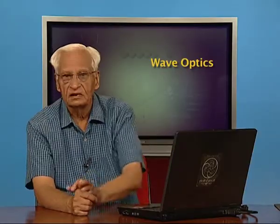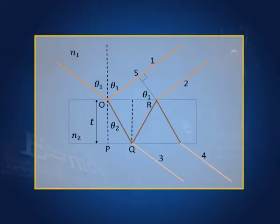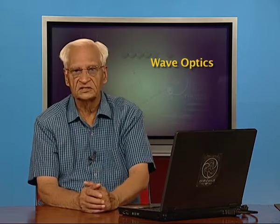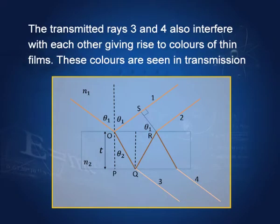I hope you remember this figure. We have medium n1 and medium n2. This is the slab or film whose thickness is t. We found the path difference and the phase difference between waves 1 and 2, and just as waves 1 and 2 can interfere destructively or constructively depending upon the phase difference between them, waves 3 and 4 can also interfere destructively or constructively depending upon the phase difference between them.